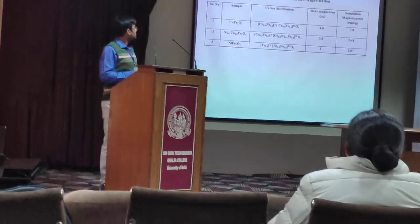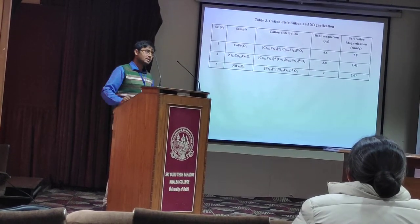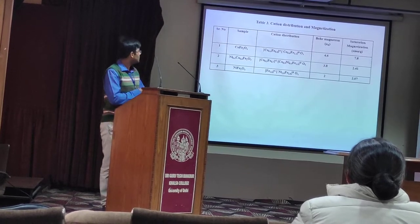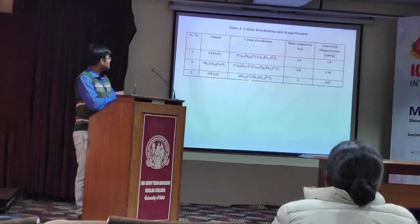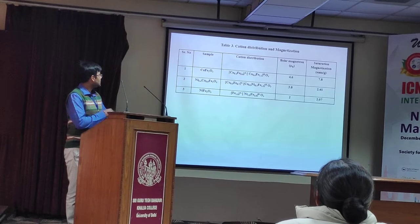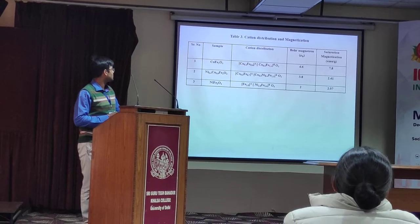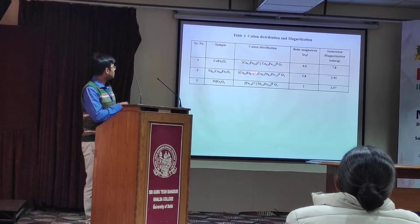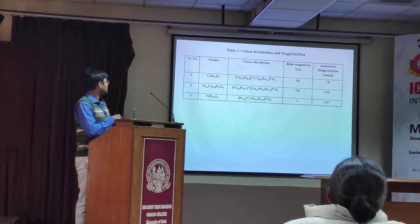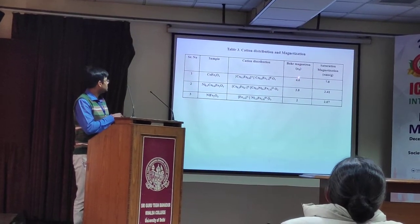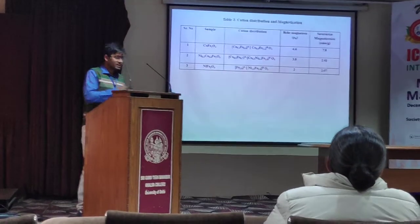The data was generated from Fullprof software. I obtained the CIF file and transferred it to Diamond software, where I applied the cation distribution. The first sample is mixed spinel, the second is mixed spinel, and the third is the inverse spinel pattern, with cobalt distributed on both tetrahedral and octahedral sites. I calculated the magnetic moment for these three samples using the magnetic moment from the CIF file. I obtained values of 4.63, decreasing in order — the saturation magnetic moment decreases.